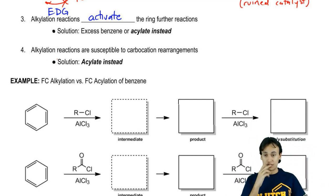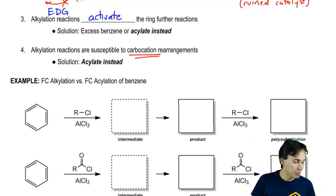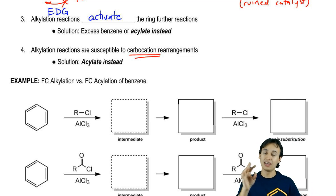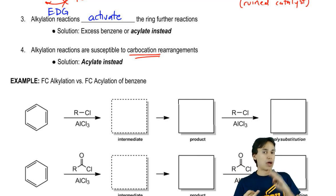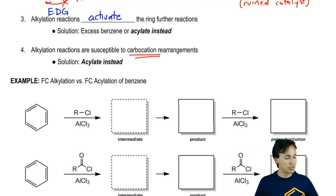Another thing: alkylation reactions are susceptible to carbocation rearrangements. Remember that because you form a full carbocation, they can move around. These limitations are piling up - you've got a rearrangement, you've got extra activity, you can't react with aniline. It turns out that the solution for both the activation and the carbocation rearrangements is to acylate instead.